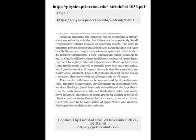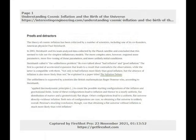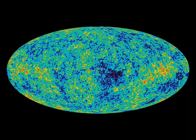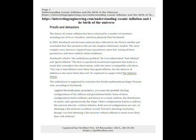A prediction of inflationary theory is that the variations are nearly scale invariant — they do not depend on the size of the region, and occur with equal magnitude on all scales. The theory of cosmic inflation has been criticized by a number of scientists, including one of its co-founders, American physicist Paul Steinhardt. In 2013, Steinhardt and his team analyzed data collected by the Planck satellite and concluded that this seemed to rule out the simplest inflationary models. The more complex ones required more parameters, more fine tuning of those parameters, and more unlikely initial conditions. Steinhardt called it the unlikeliness problem.